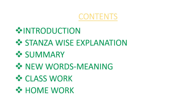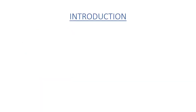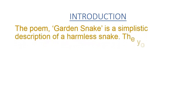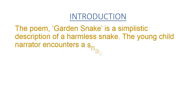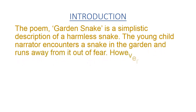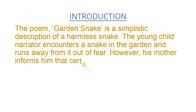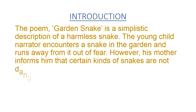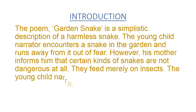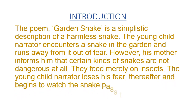Moving to the first slide — introduction. What is the poem all about? The poem 'Garden Snake' is a simplistic description of a harmless snake. The young child narrator encounters a snake in the garden and runs away from it out of fear. However, his mother informs him that certain kinds of snakes are not dangerous at all. They feed merely on insects. The young child narrator loses his fear, and thereafter begins to watch the snake pass through the garden.